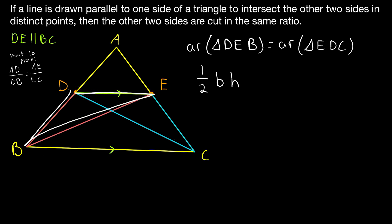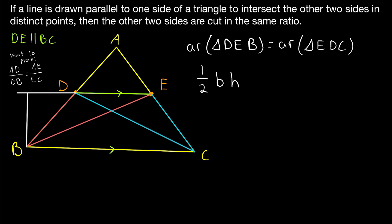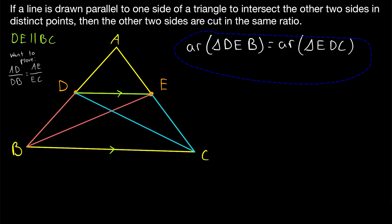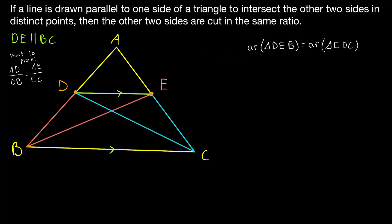The height of triangle DEB, if we extend its base, is the perpendicular distance from DE to the line BC. Similarly for triangle EDC. Since parallel lines are everywhere equidistant, both triangles have the same base and the same height, and thus the same area. This fact will come in handy later in the proof.